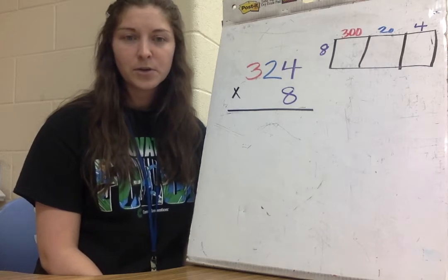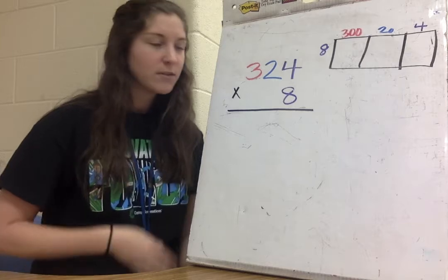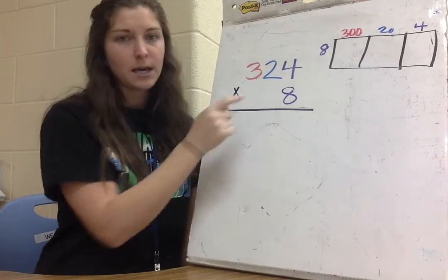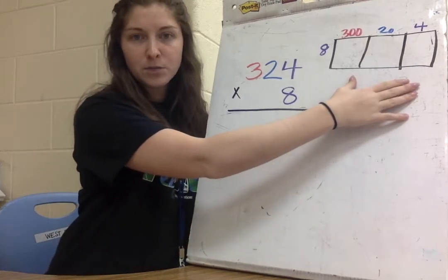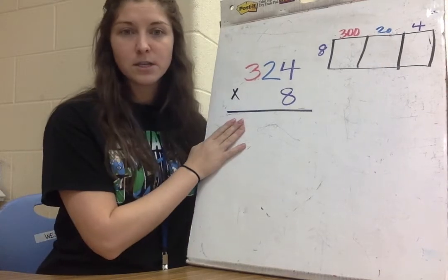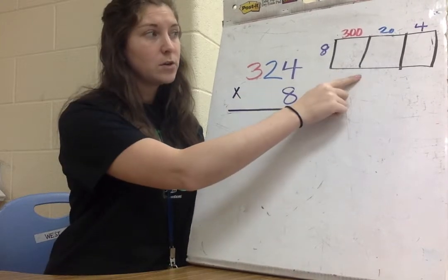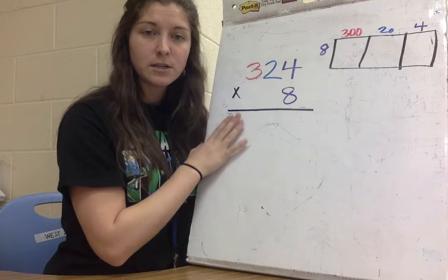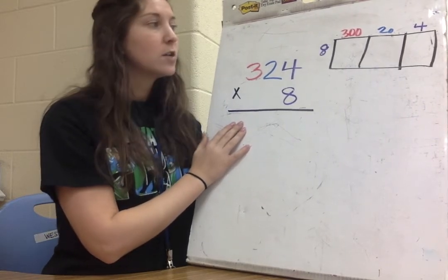We're going to do a quick tutorial on how to multiply using the standard algorithm. I have a three-digit by one-digit problem right here: 324 times 8. I have the box method written over here, which is what you guys are most familiar with. Some of you may already use the standard algorithm, but either way is okay. If you're interested in learning the standard algorithm, this is the perfect place to learn it.